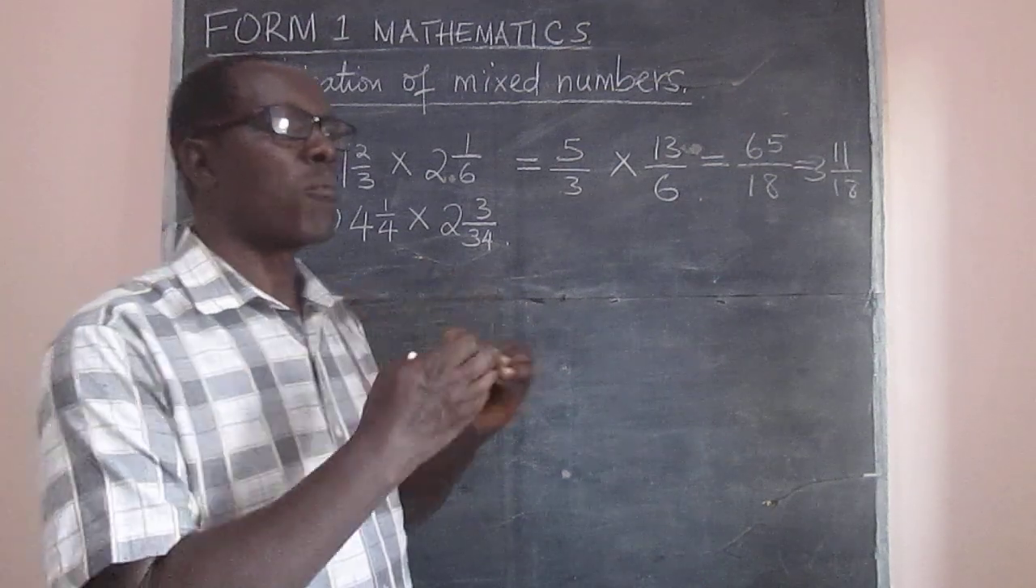So at the end of it all we'll get a question maybe from past Form 4 paper and work it out so that we see that Form 1 knowledge is also required during the summative evaluation.